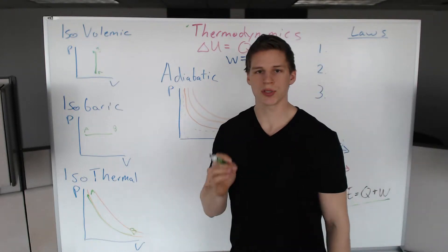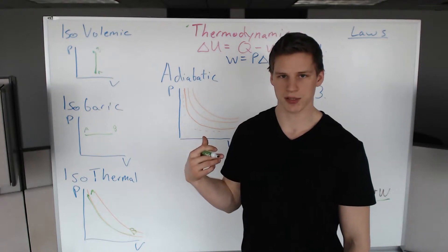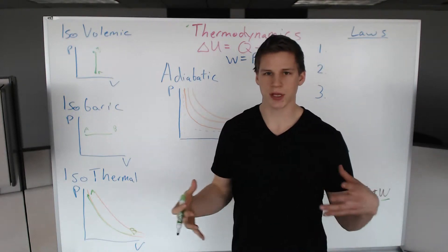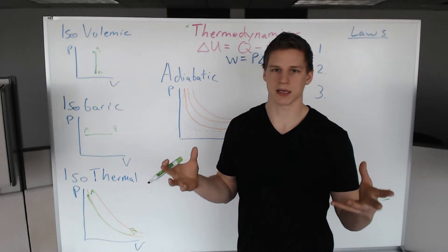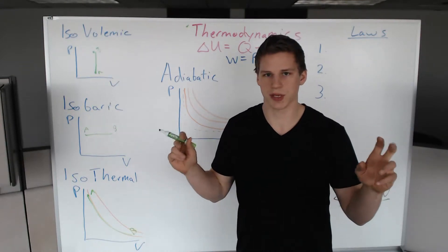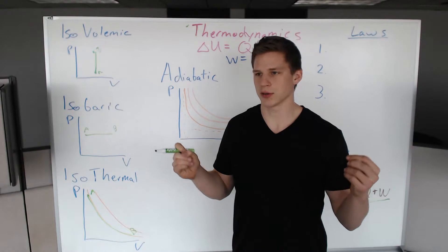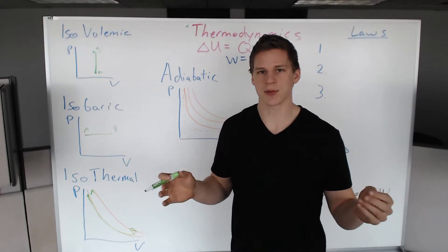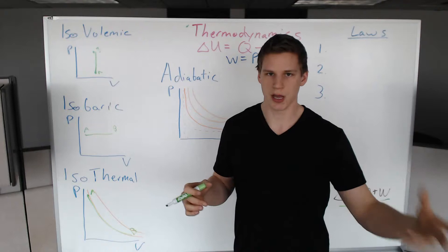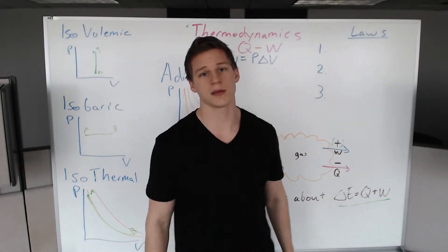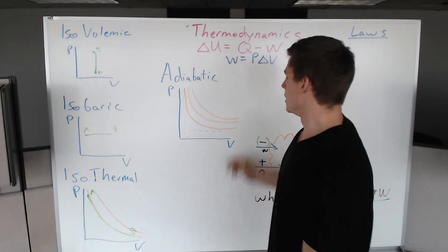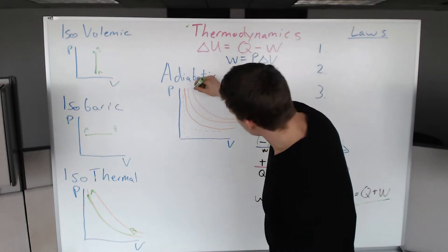That's isothermal, and then adiabatic. Here's what most students don't know. Most students do not know there are entropy lines in this graph. Entropy is your amount of, or it's easy to think of it as chaoticness. The messier something gets, the more entropy it has. The entropy of the universe is always increasing.